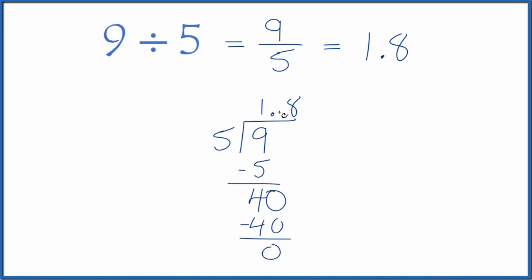So 9 divided by 5 is 1.8. That's what we found up here. This is Dr. B, dividing 9 by 5. You get the fraction 9 fifths, or the number 1.8.